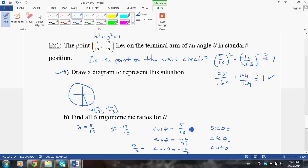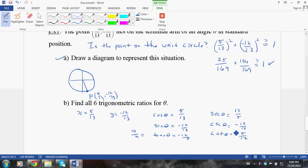The secant function is the reciprocal, so I say 13 over 5. And, the cosecant function is equal to negative 13 over 12. It's just that same fraction in reciprocal form. And, then the cotan is equal to negative 5 over 12. So there we've got all our answers. I hope you can read that okay.